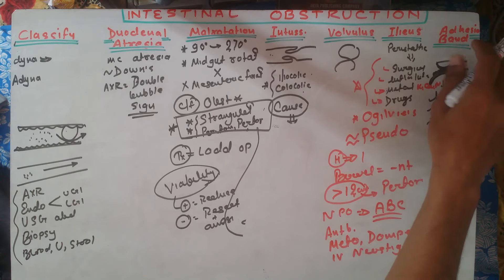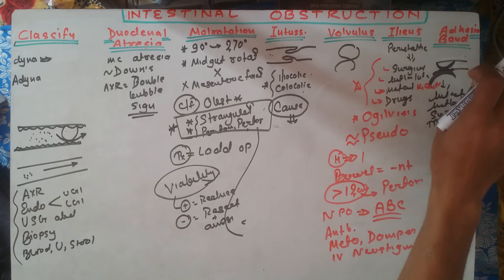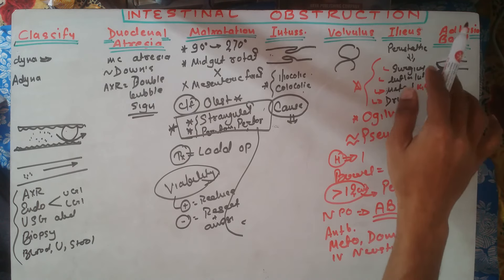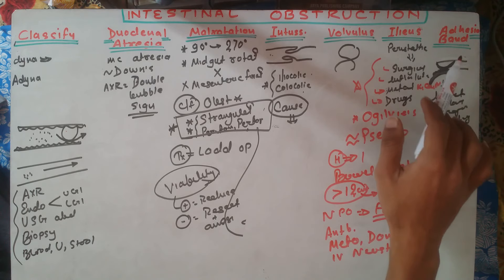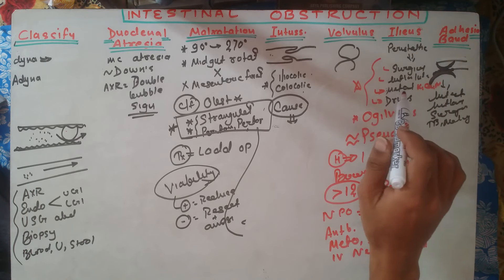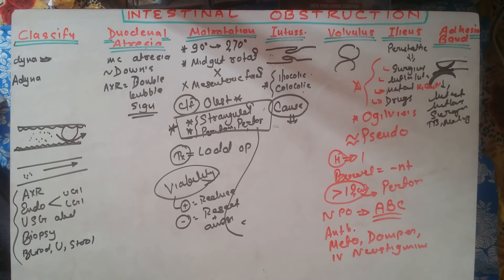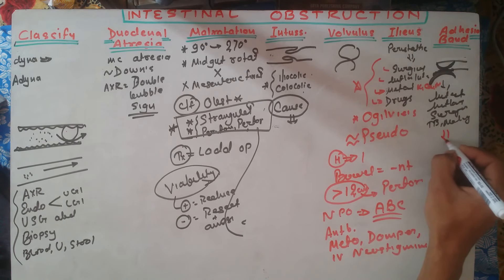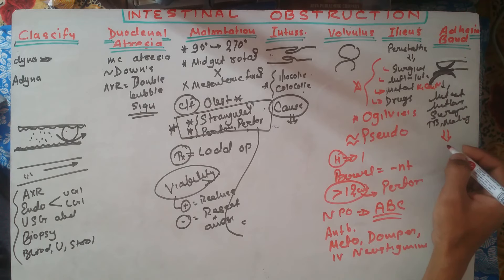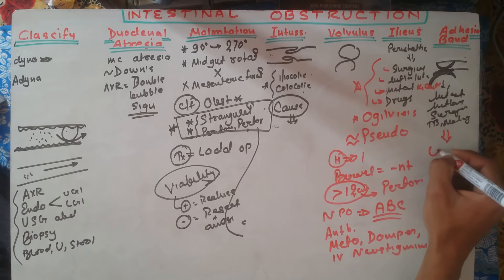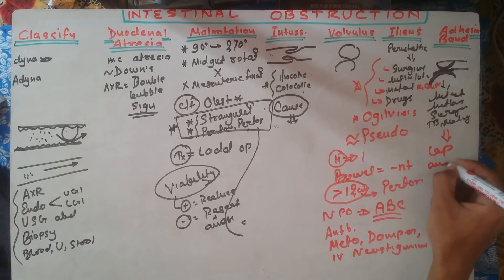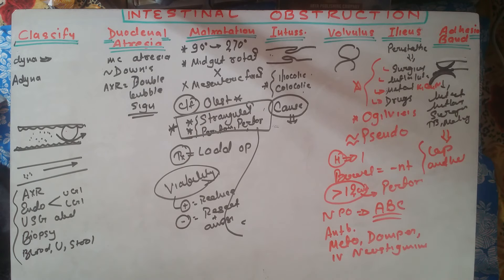Due to some causes, there may be adhesion of the intestinal lumen causing obstruction. Usual causes behind adhesion include infection, surgery, bowel ischemia, tuberculosis, and any prior surgery. Treatment is adhesiolysis — dissolution of the adhesion — and laparoscopic surgery can also be performed.